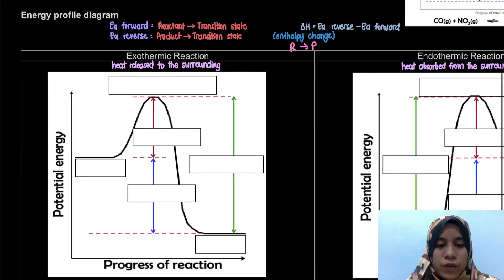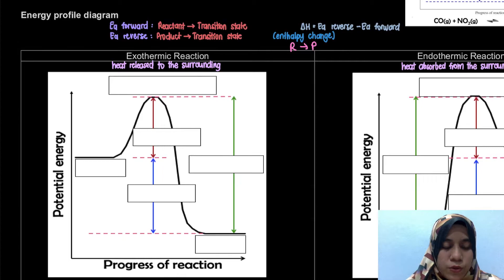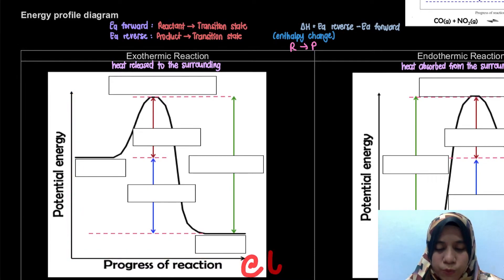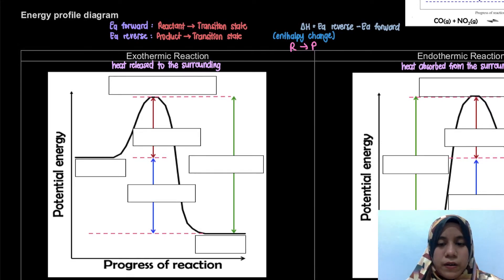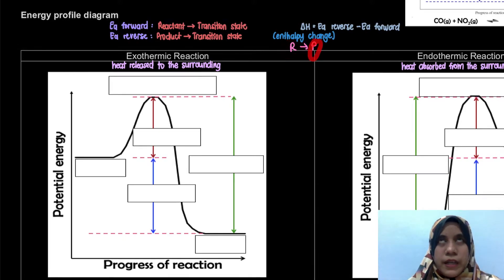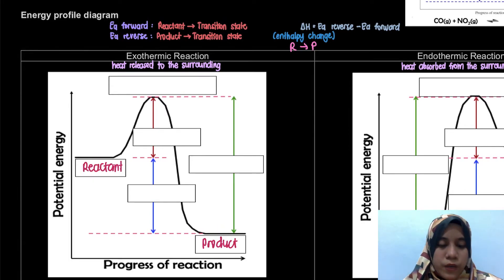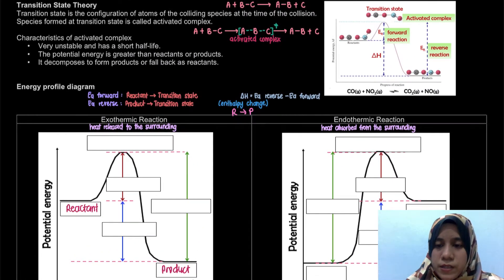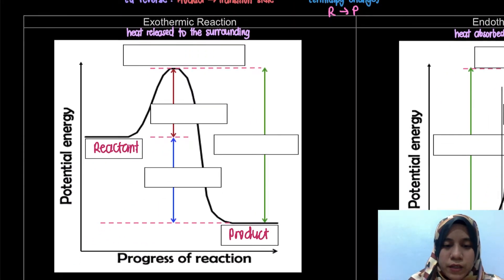Based on our learning outcome, we need to learn how to draw the energy profile for exothermic and endothermic reactions. The y-axis is potential energy and the x-axis is progress of reaction. At the start of the reaction we have our reactant, and at the end we have our product. Before the reactant changes to product, it passes through the transition state — the highest energy point on the diagram.